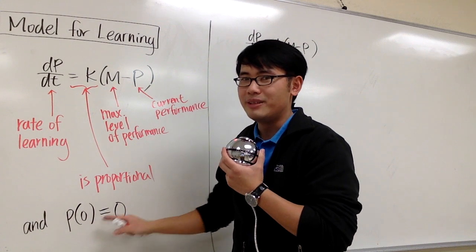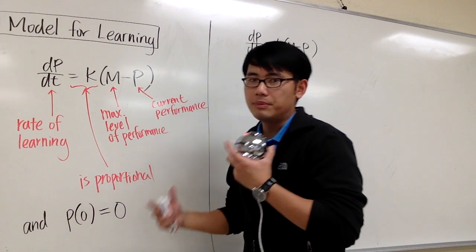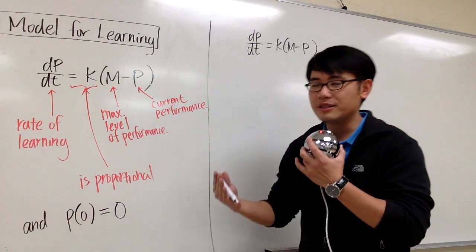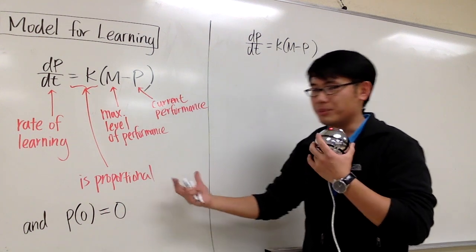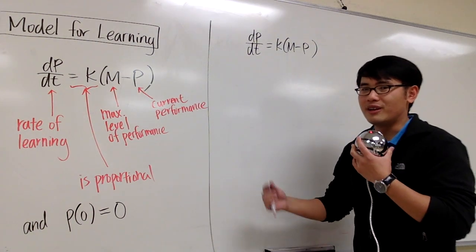And we also have an initial condition, p of 0 shall be 0. Why? Because before we learn anything, certain skills or so, we don't know anything about it. That's why the performance will be 0 at time equal to 0 before we learn anything.